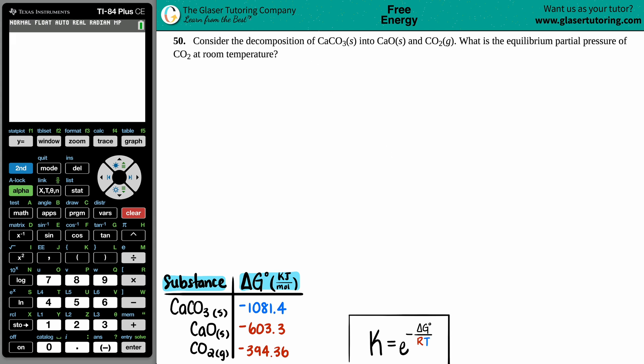Number 50: Consider the decomposition of CaCO3 solid into CaO solid and CO2 gas. What is the equilibrium partial pressure of CO2 at room temperature? Okay, so first things first, they're trying to describe a reaction. We're decomposing calcium carbonate into these two products, so that's the first thing I'm going to write out.